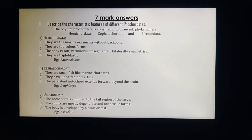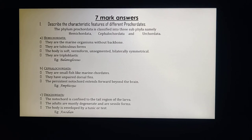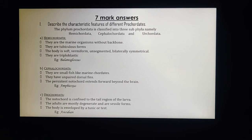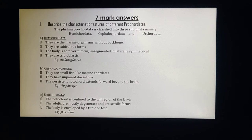Cephalocordata: they are small fish-like marine chordates. They have unpaired dorsal fins — comparatively smaller fins similar to those of fish, which help in locomotion. The persistent notochord extends forward beyond the brain. Example: Amphioxus.